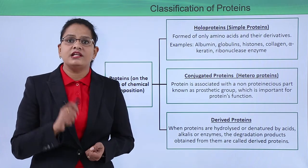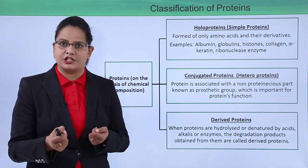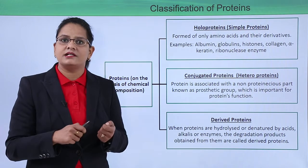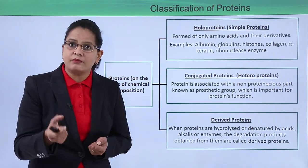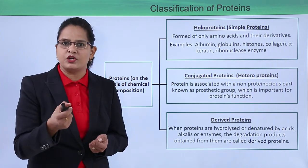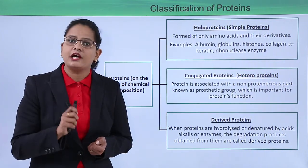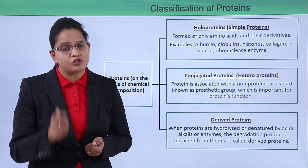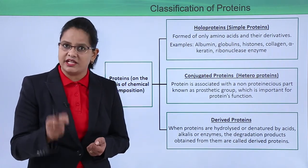Derived proteins result from the denaturation of proteins by heat or certain chemicals, which breaks them down into resultant molecules such as peptones, proteoses, or small polypeptides. These are called derived proteins. They also have individual functions and names, which will be discussed in detail in the next video.